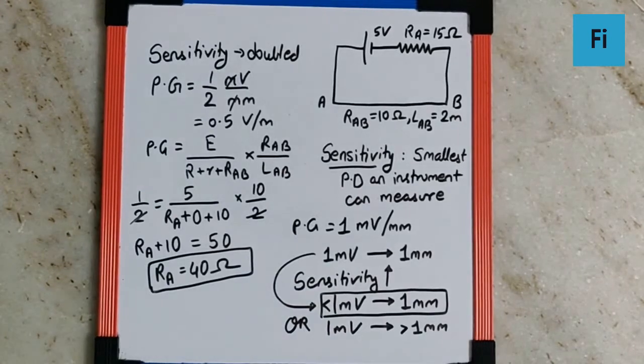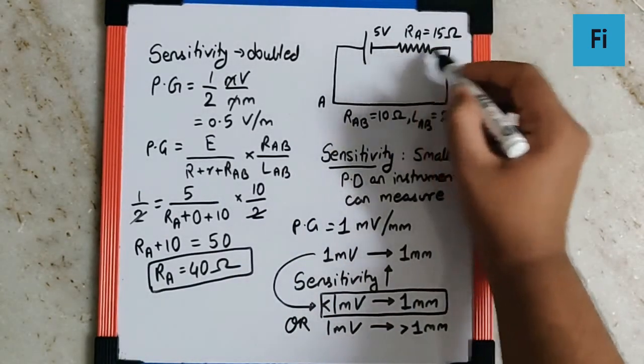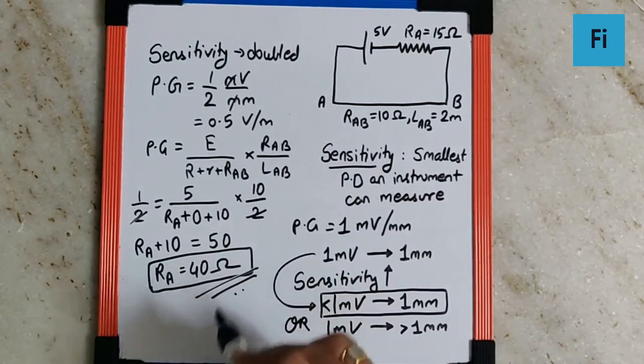So to make the sensitivity double we need to convert this 15 ohm external resistance to a 40 ohm external resistance so that sensitivity will be doubled.